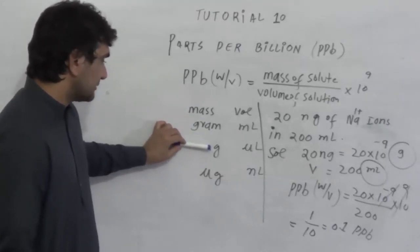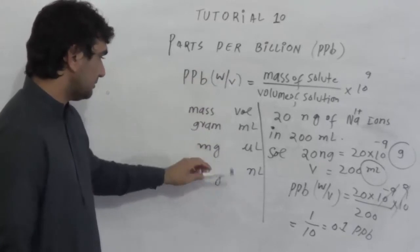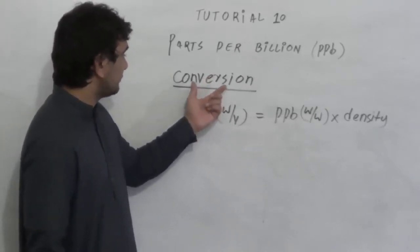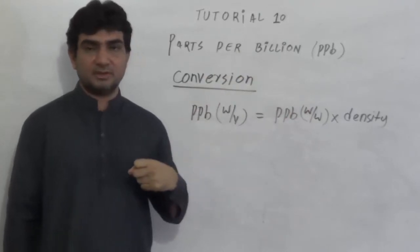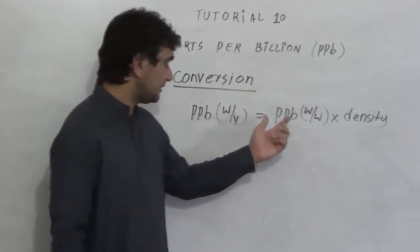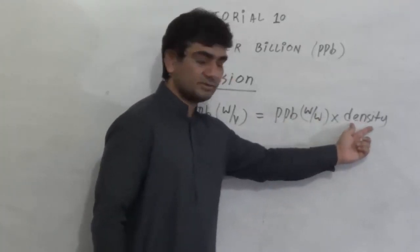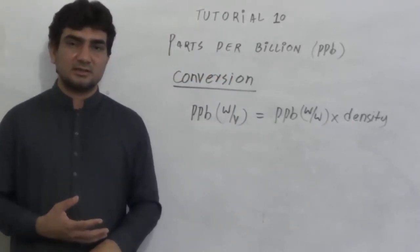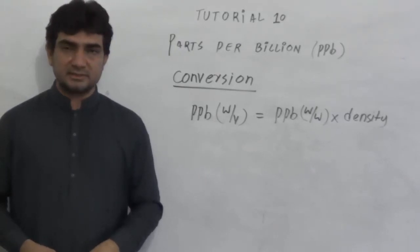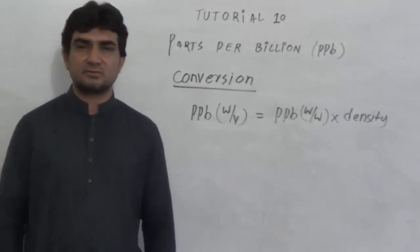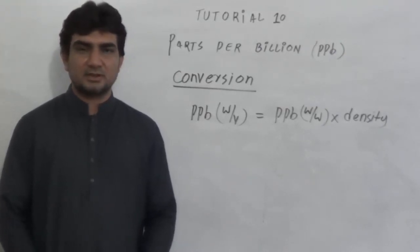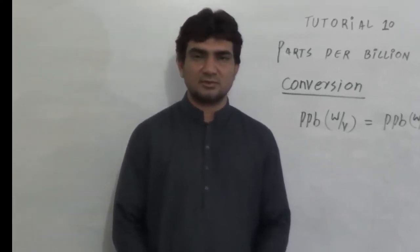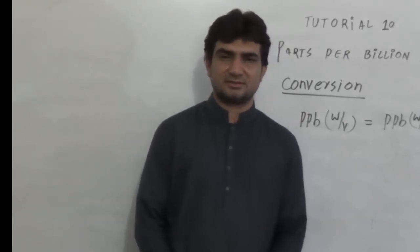This is an important point: the concentration in parts per billion weight by volume can only be computed correctly if you use equivalent mass and volume units. We can also interconvert parts per billion weight by weight and weight by volume — multiply the weight by weight value by the density to get the weight by volume concentration. This is exactly like the interconversion of percentage weight by weight and weight by volume. I hope these tutorials have improved your skills in calculating concentration terms, making solutions, and doing dilutions. Stay tuned for our next lectures. Thank you.